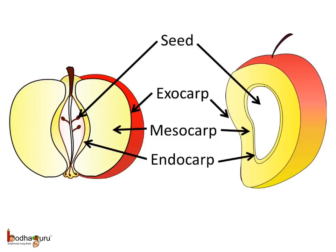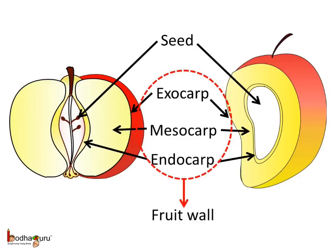If we cut any fruit we can see three distinct parts of the fruit wall that protect the seed. The outermost skin, which we peel in many fruits, is the exocarp. The next layer, which we eat in most fruits, is the mesocarp. The innermost layer which covers the seed is the endocarp. So the exocarp, mesocarp, and endocarp constitute the fruit wall. A fruit may have more than one seed, like in tomato, lemon, and watermelon.